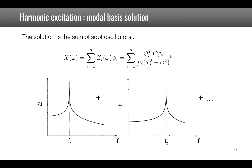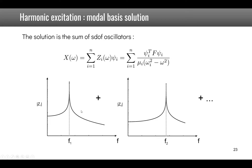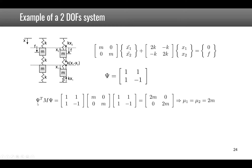Illustrating on the two DOF system: mode shapes are [1,1] and [1,-1]. Computing Psi-transpose M Psi yields a diagonal matrix with 2m on the diagonal, so mu_1 = mu_2 = 2m. The modal excitation shows the first mode is excited by F and the second by minus F.